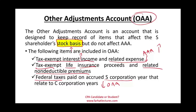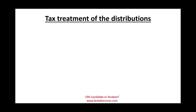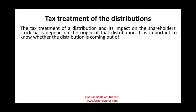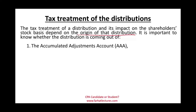Now the important question: what is the tax treatment of a distribution? The tax treatment depends entirely on the origin of the distribution. First, we look at whether there is an AAA account. If the distribution is coming from the AAA, is it taxable? No — it is not taxable. The AAA keeps track of amounts you already accounted for and paid taxes on, even though you did not actually receive the cash at that time.